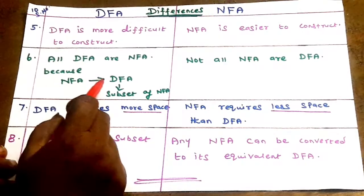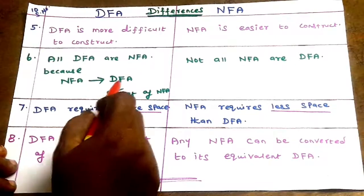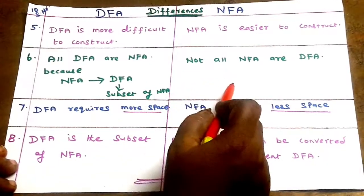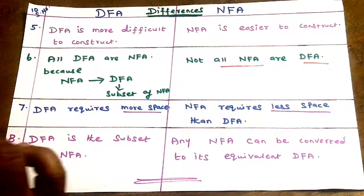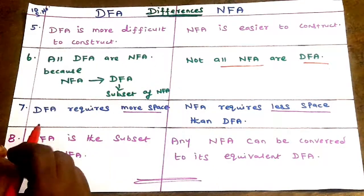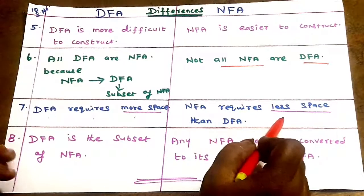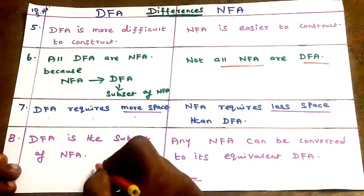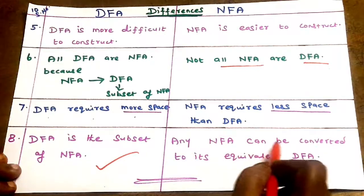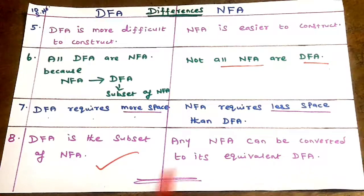All DFA are NFA — all DFA are a subset of NFA. But not all NFA are DFA. However, NFA can be converted to DFA. DFA requires more space, but NFA requires less space than DFA. Any NFA can be converted to its equivalent DFA using the subset construction algorithm.